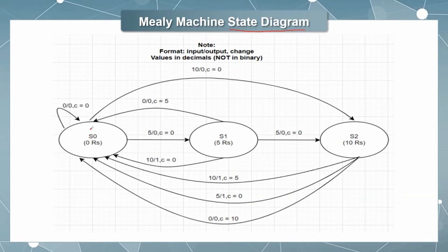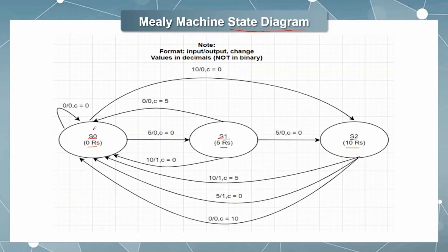So in this state diagram I have taken three states. Each state signifies when the vending machine has rupees 0 in it, rupees 5 in it, and rupees 10 in it. We do not require a fourth state in which the vending machine has rupees 15, because that already signifies the transaction is complete and the vending machine should revert back to state 0. After that, this cycle can go again and again as much as the user requires.